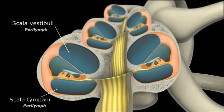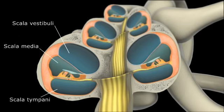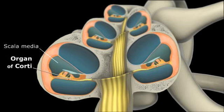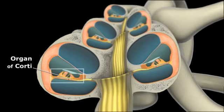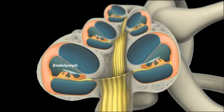Between the scala vestibuli and scala tympani is the scala media. This houses the organ of Corti, which is referred to as the receptor organ of hearing. The scala media is filled with endolymph.